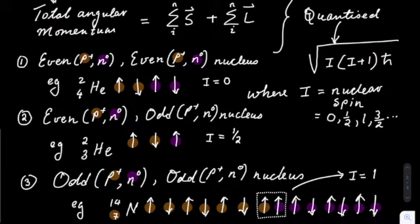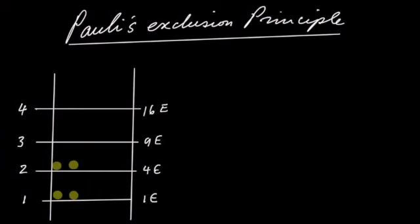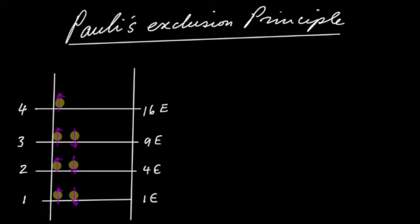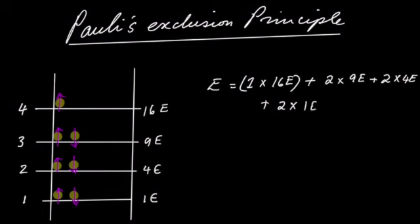Pauli's exclusion principle only permits 2 protons to be on the same energy level. The same also applies for neutrons. Let's consider a system of 7 neutrons in an infinite square well. 2 neutrons can occupy the same energy state, provided they are in opposite spins. The total energy of this system can therefore be calculated as follows.